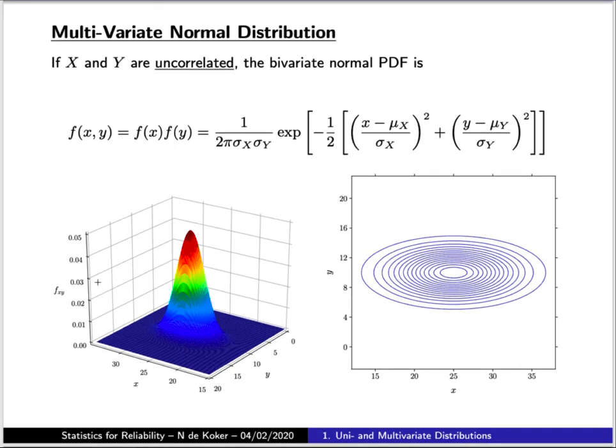So when we multiply them, what we end up with is this simple exponential function where the argument is a sum over the standardized values for each of the individual variables. So we have the mean and the standard deviation for x and the mean and the standard deviation for y in there.